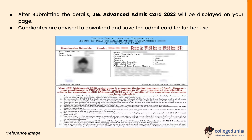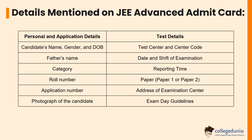Candidates are advised to download and save the admit card for further use. Let's check the details mentioned on the JEE Advanced admit card: candidate's name, gender, date of birth, father's name, category, roll number, application number, photograph of the candidate, test center and center code, date and shift of the examination, reporting time, paper 1 or paper 2, and address of the examination center.